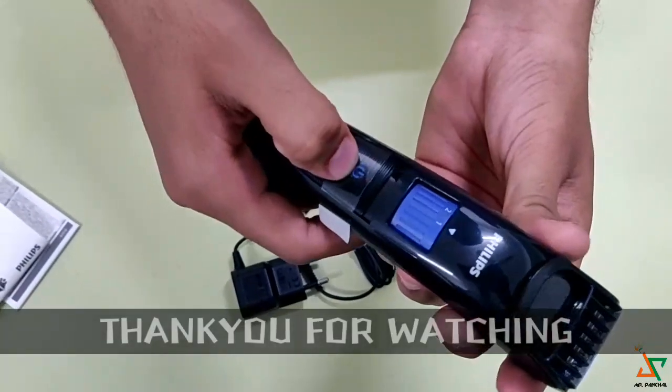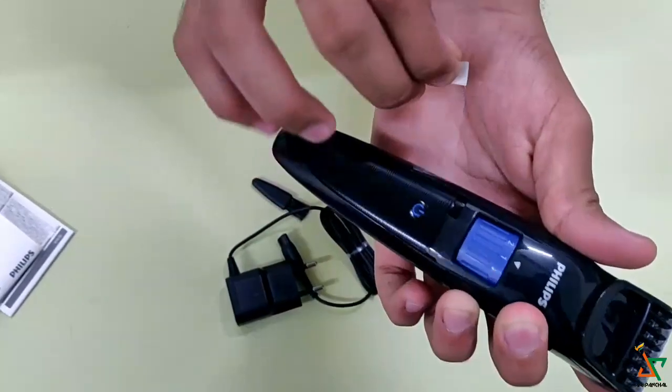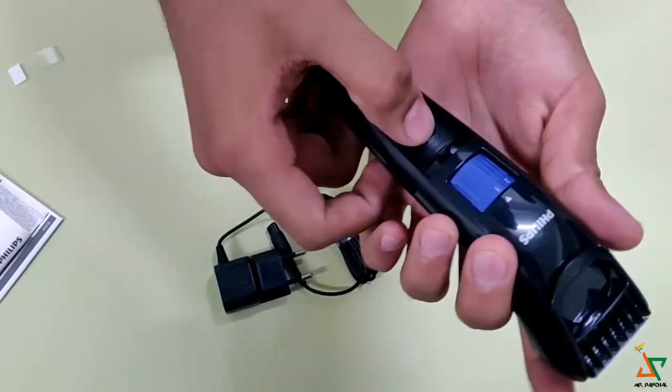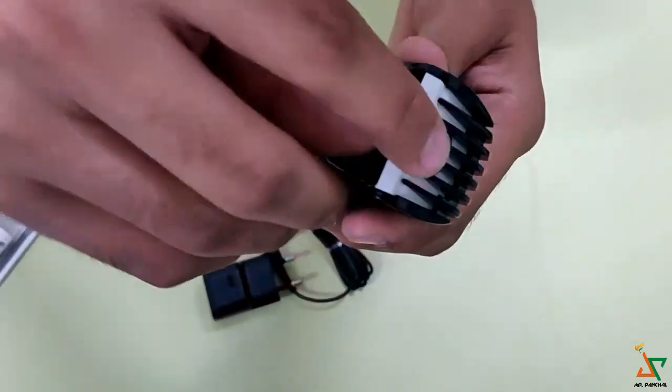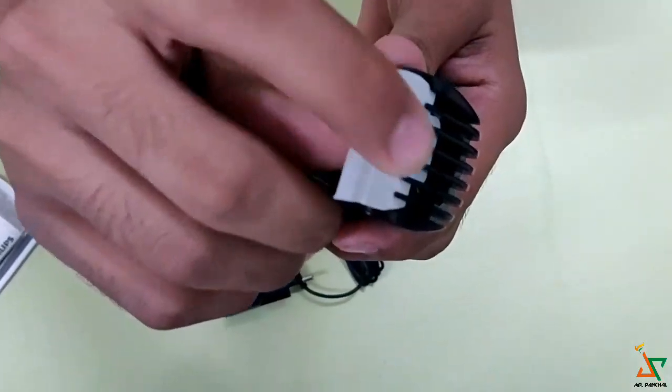And one switch here. Then there is one seal where we have to open this. Then turn on the switch like this. Then the trimmer is on. And one seal is also there where we have opened this too.